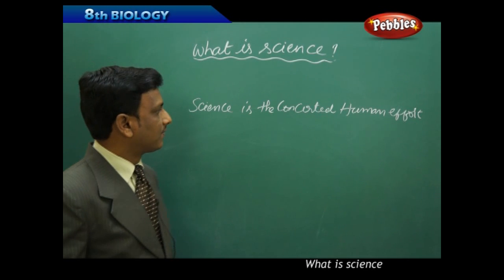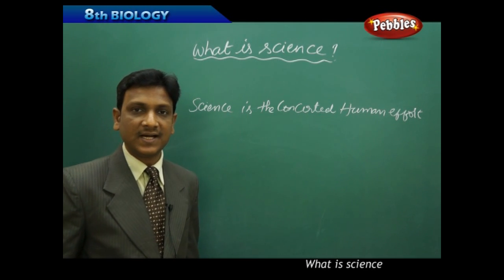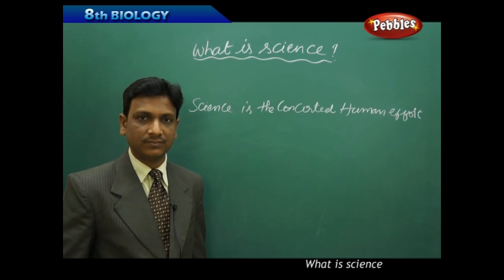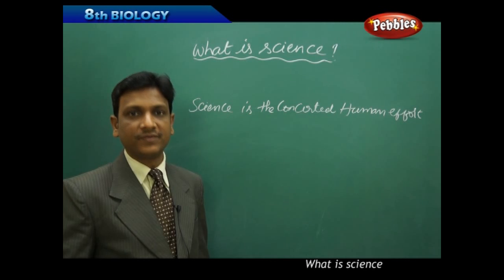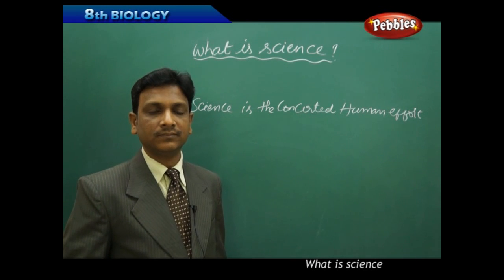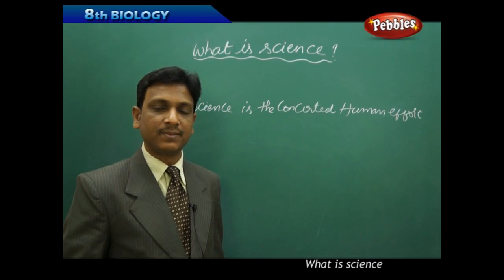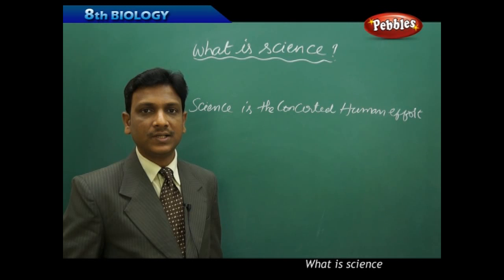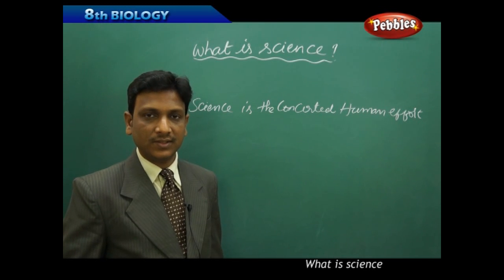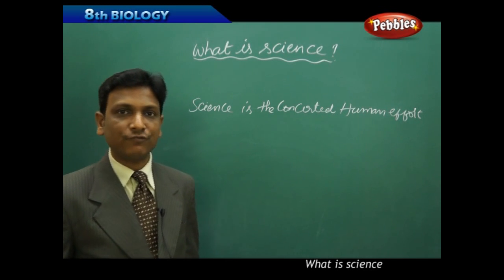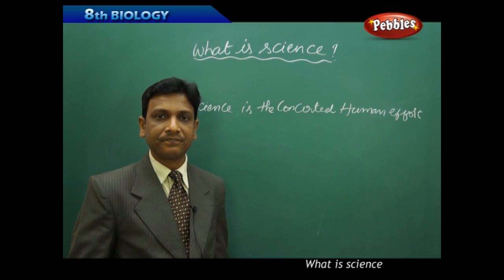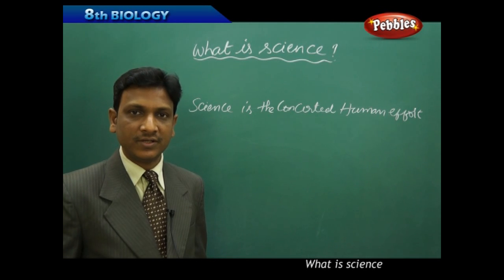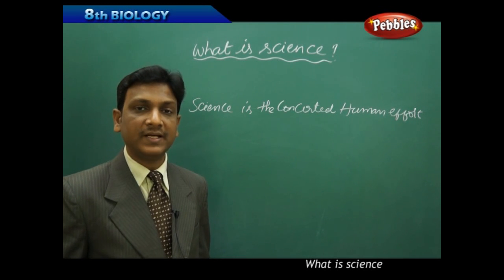Science is the concerted human effort of understanding nature. So how is nature understood? By processes like observation - the nature is observed and experiments are conducted, experimentation and coming to some inference or conclusions. So by that we can understand the nature. We always see that scientists are involved in conducting experiments. That is the research part of the research work. So by experimentation, we will come to know various facts.